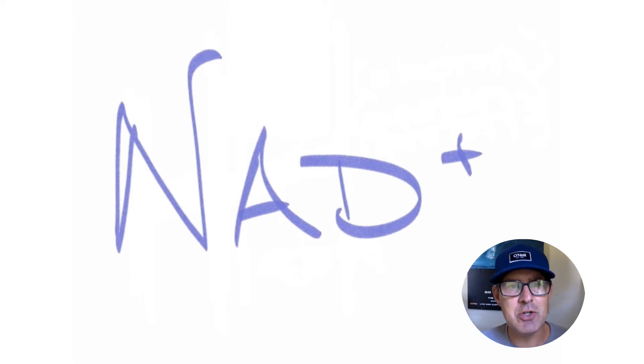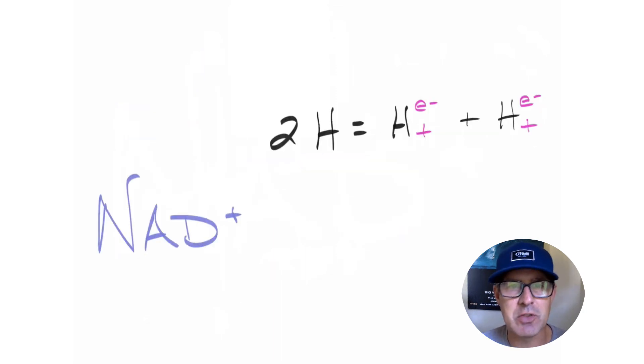The electrons from the hydrogen atom will be transferred to NAD+. Let's look at this process. NAD+ is going to grab two hydrogen atoms each time it grabs electrons. Keep in mind, we have two hydrogen atoms here. Here's one hydrogen atom, here's the other hydrogen atom. Each of them has an electron and a proton.